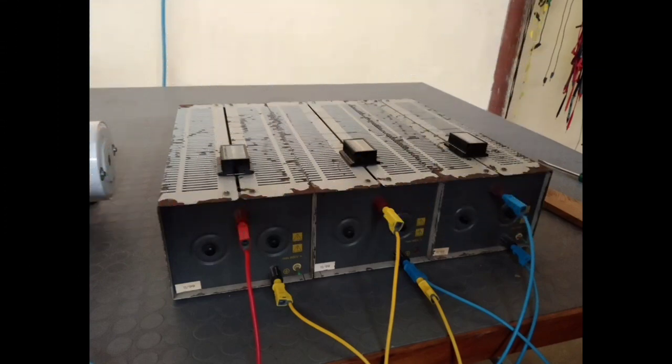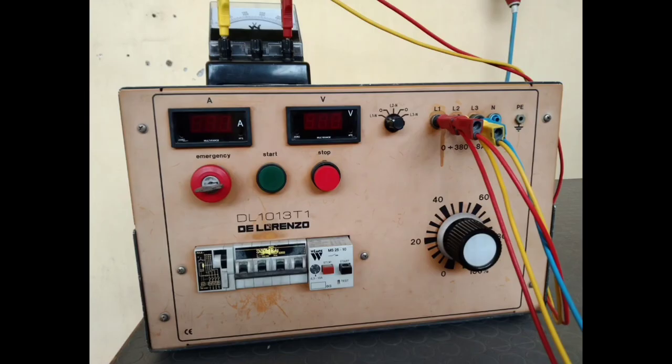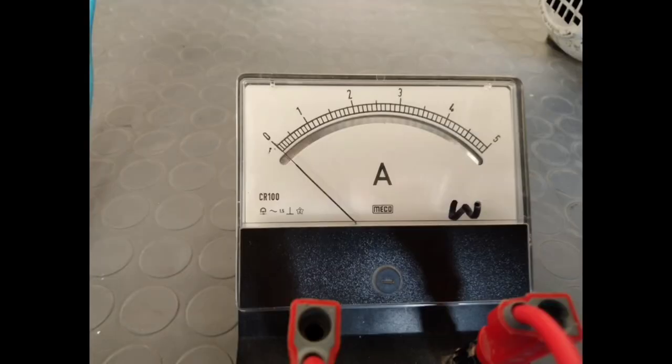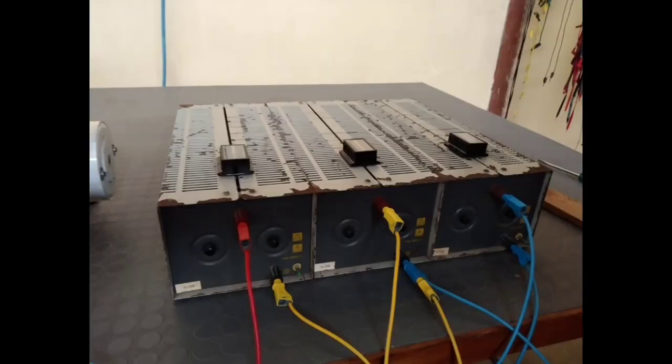Rotor resistance control method. In this method, we have used variable three-phase power supply, tachometer to measure RPM, and voltmeter and ammeter. We have used voltmeter of range 0 to 500 volts and ammeter of range 0 to 5 amperes. We have also used three resistors of 50 ohms each.